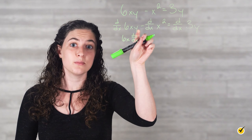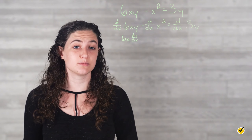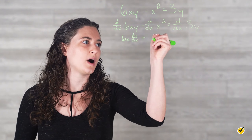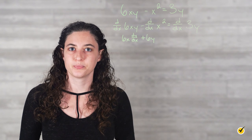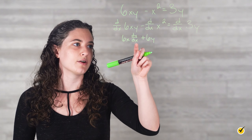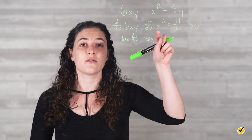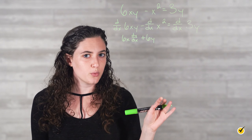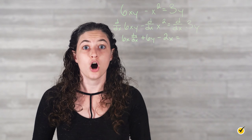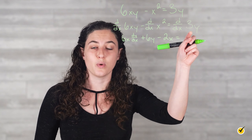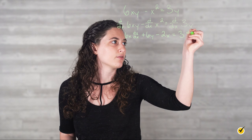Because d over dx of y can be written as dy over dx. Continuing with the product rule, we add second times the derivative of the first. So we'll add y times the derivative of 6x, which is 6, giving us 6y. Putting these together, we then have 6x dy over dx plus 6y as the derivative of the first term. The next derivative is the derivative of x squared. Since this term doesn't have any y's, we can just take its derivative normally and get minus 2x. On the right side, we have the derivative of 3y. Since the derivative of y is dy over dx, we will get 3 dy over dx.